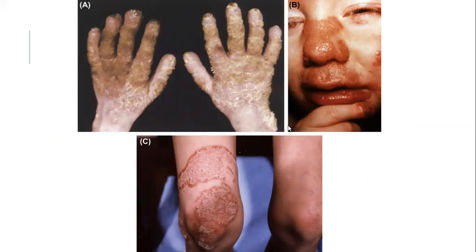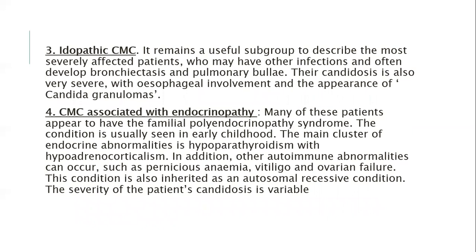Chronic mucocutaneous candidiasis with associated endocrinopathies: most of these patients have familial polyendocrinopathy syndrome, seen usually in early childhood. The main cluster of endocrine abnormality is hypoparathyroidism with hypoadrenocorticism. In addition, other autoimmune abnormalities such as pernicious anaemia and ovarian failure may also be seen. The condition is inherited as an autosomal recessive condition and the severity of candidiosis is variable. The fifth type is late-onset chronic mucocutaneous candidiasis, occasionally seen in adult patients found to have the syndrome associated with thymoma. Patients with systemic lupus erythematosus occasionally develop severe nail changes and oral manifestations.